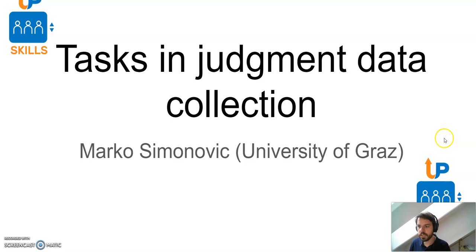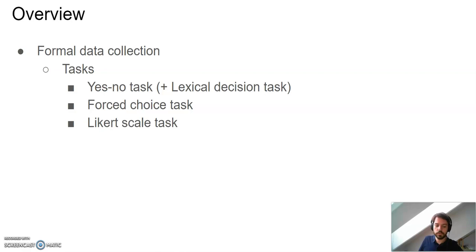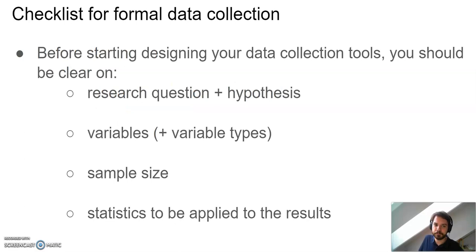We'll be talking about tasks in judgment data collection. Just where we finished the previous video was basically this overview of things that you need to have in place in order to start formal data collection. We'll briefly come back to that — what are the preconditions for formal data collection — and then exemplify some specific tasks that you can use. The purpose of all this is for you to have sufficient notion of these tasks that you can implement them in your own experiments.